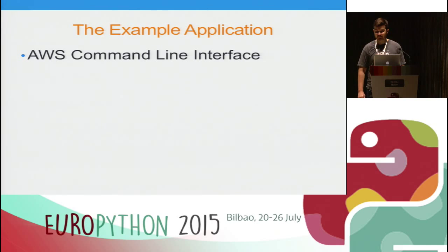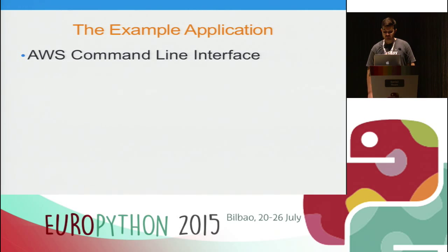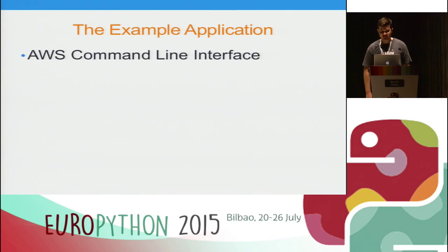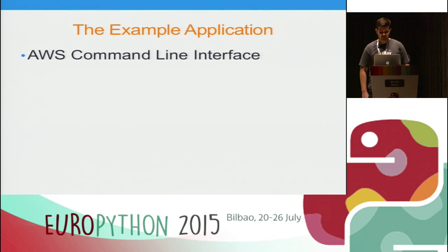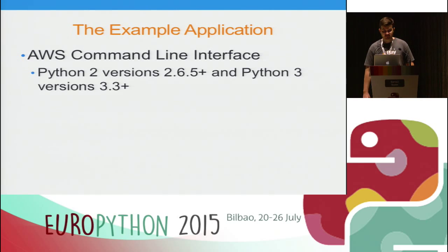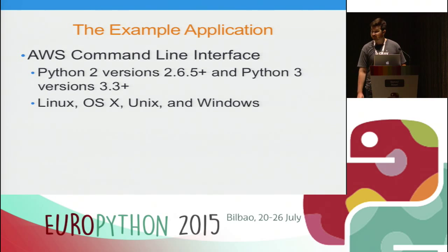The sample application I'm going to be talking about is the AWS Command Line Interface. It's a Python-based CLI used for managing your AWS resources. I chose this application because I have a lot of experience with it, and in the end it's a CLI — most users are not Python developers, they're not concerned with what Python version they're running or the operating system; they just want it to work in the shell. The AWS CLI is compatible on Python 2.6.5 and higher, Python 3.3 and higher, and on Linux, Mac, Unix, and Windows.